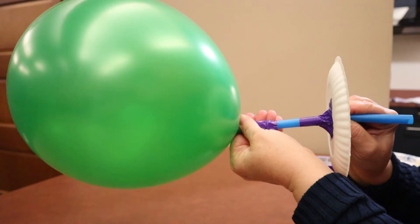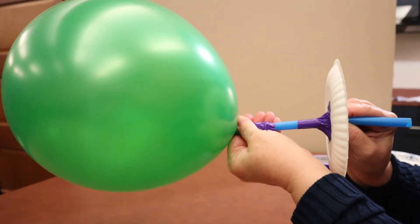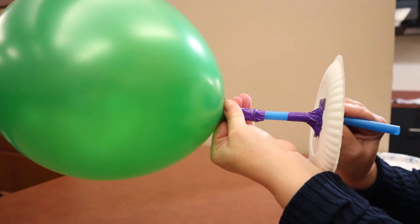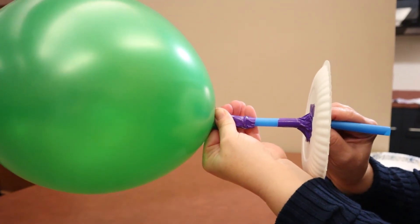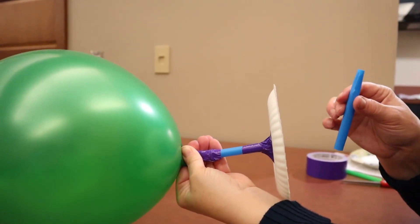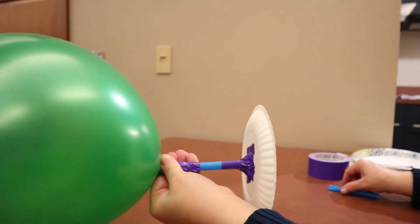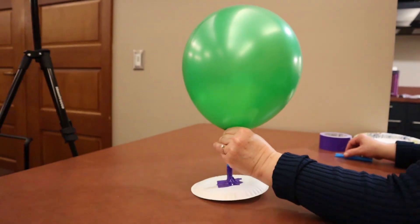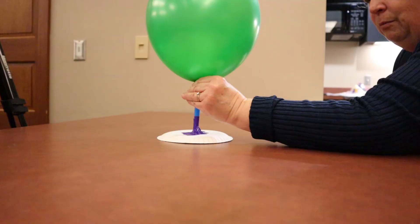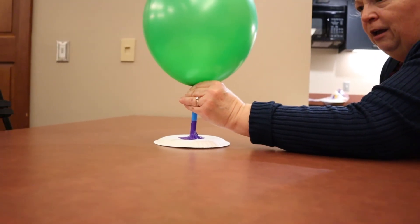Once you get your balloon blown up as big as you think you want it, you're going to take your thumb and your fingers and pinch the balloon so no air can escape. Then you're going to take and pull that additional straw out of the bottom. Then take the balloon and set it on the table, straight up with the plate on the table, and then let go.